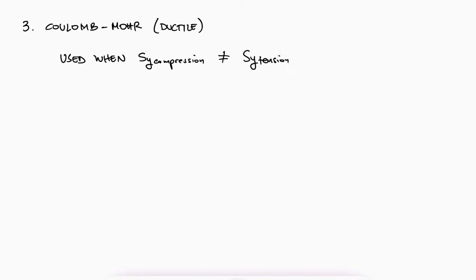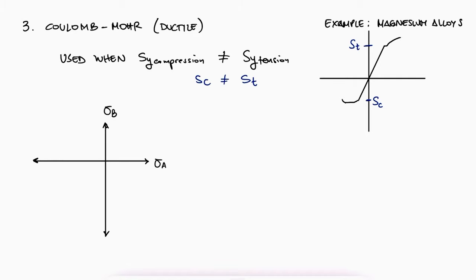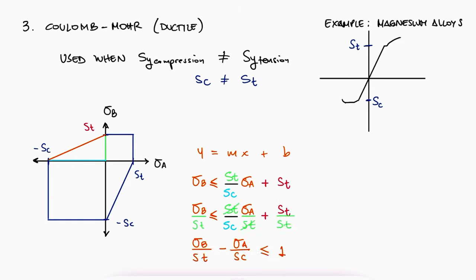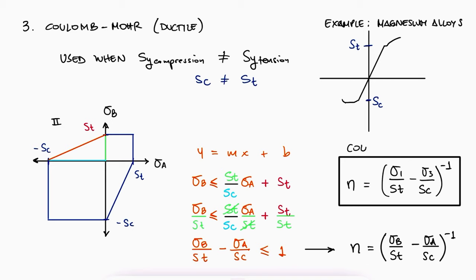Finally, we have the Coulomb-Moore criterion for ductile materials. This is used with ductile materials that have different yield strengths for tension and compression — for example, some magnesium alloys. The stress envelope is similar to Tresca with a negative compression yield strength on the negative axis. In this case, the diagonal line has a slope of St over Sc and St as the y-intercept, where x and y are sigma a and sigma b respectively. Knowing we want to stay within the envelope, we simplify and define the factor of safety as 1 over the left-hand side. This expression can be written in terms of sigma 1 and sigma 3 so that it works for any of the four quadrants.